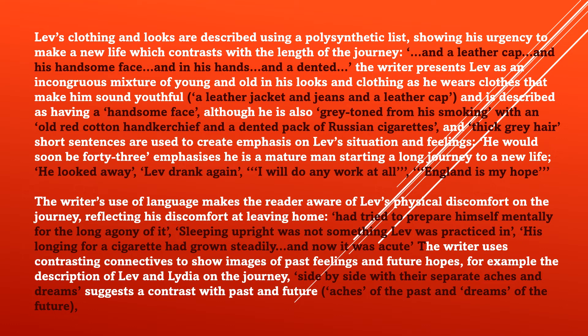The writer's use of language makes the reader aware of Lev's physical discomfort on the journey, reflecting his discomfort at leaving home. I quote: 'He had tried to prepare himself mentally for the long agony of it — sleeping upright was not something Lev had practiced — and his longing for a cigarette had grown steadily and now it was very sharp, acute.' The writer also uses contrasting connectives to show images of past feelings and future hopes — for example, the description of Lev and Lydia on the journey 'side by side with their separate aches and dreams,' where 'aches' represent the past and 'dreams' the future.